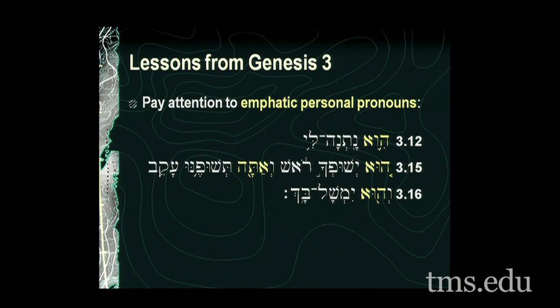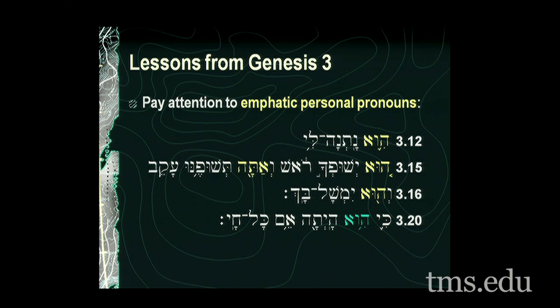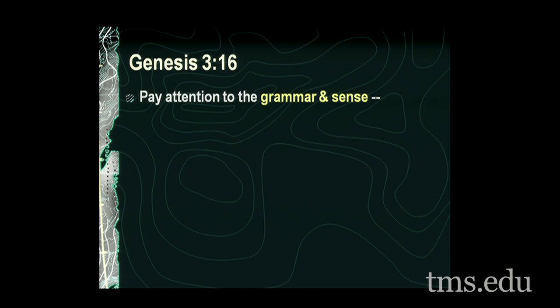In Genesis 3:16, when we say 'he will rule over you,' that is a promise — it is something good within a section dealing with a curse. Your husband will continue to rule over you in the same fashion as he was made your head even before the fall. This continues, it gives security — it's a promise to the woman that she will be cared for by her provider, by her husband. And in Genesis 3:20, 'because she herself was the mother of all living' — notice the perfect of 'hayah.'